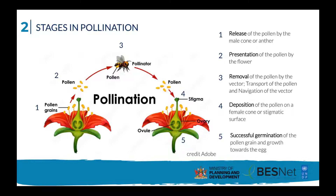I will also include here the navigation of the vector. In some descriptions both the transport and navigation of the vector are considered separate stages; I have chosen to merge them as one. Next, number four, we have the deposition of the pollen onto the female cone in gymnosperms, or the stigmatic surface in angiosperms. And lastly, the successful germination of the pollen grain and its subsequent growth towards the egg. To recap those stages: release of pollen, presentation of pollen by the flower, removal and transport by the vector, deposition onto the stigma surface, and finally germination and growth towards the egg.